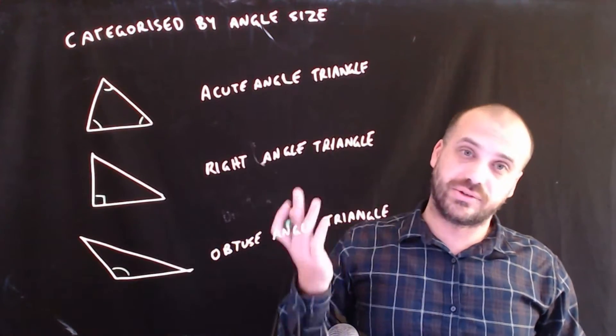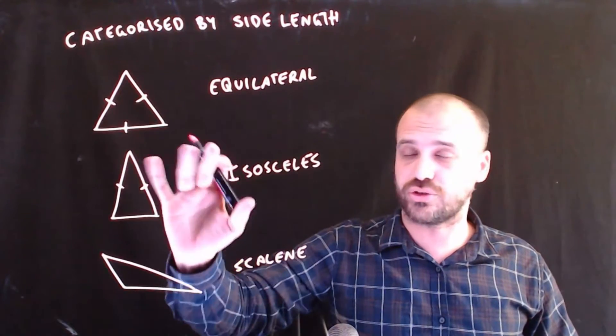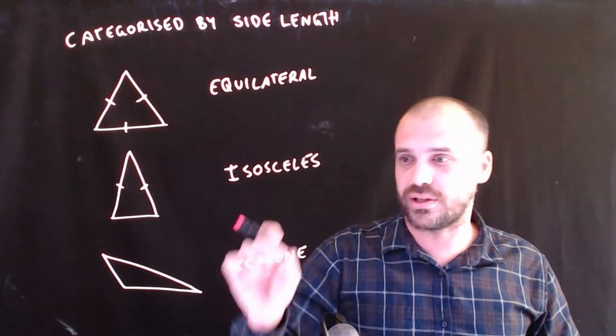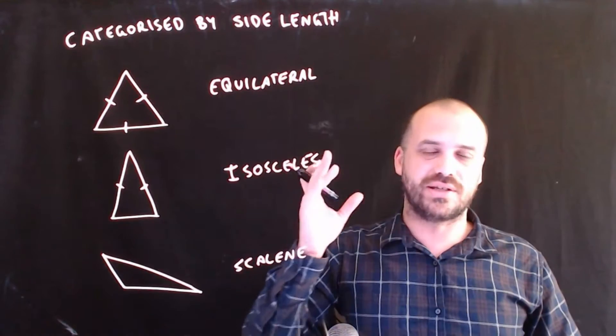So that's categorized by angle size. Now, we can also categorize by side length. We have equilateral triangles where all of the side lengths are the same. We have isosceles triangle where only two of the side lengths are the same. And we have scalene triangles where all three sides are different.